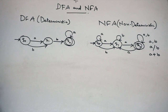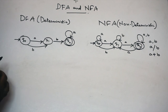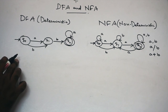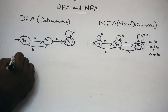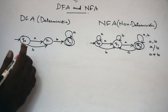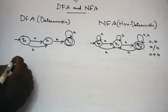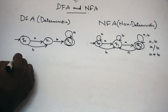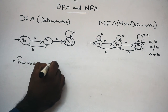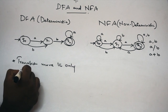So this is the formal definition for DFA and NFA. M suffix D is defined for DFA. Q is set of states, alphabet, transition function, Q0 is initial state, and F is set of final states. We can have more than one final state. Initial state is one; final state is more than one.